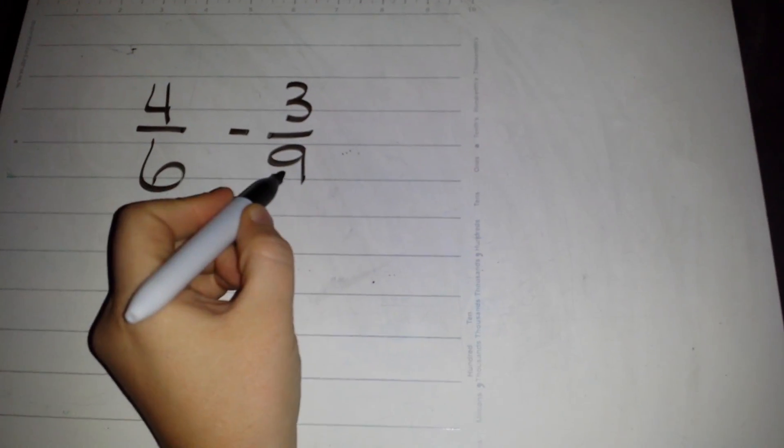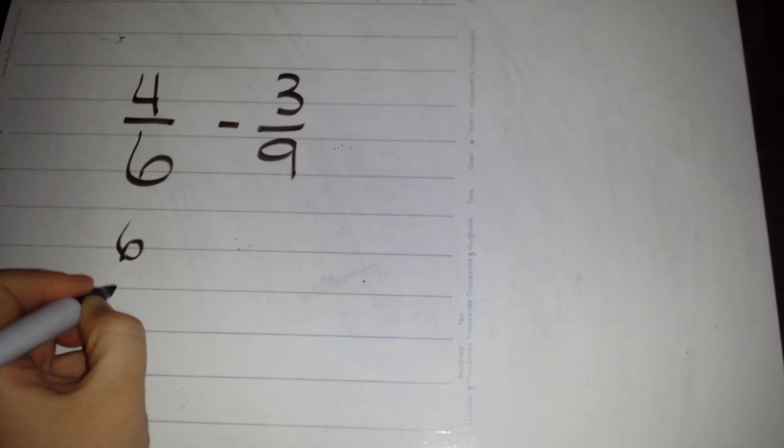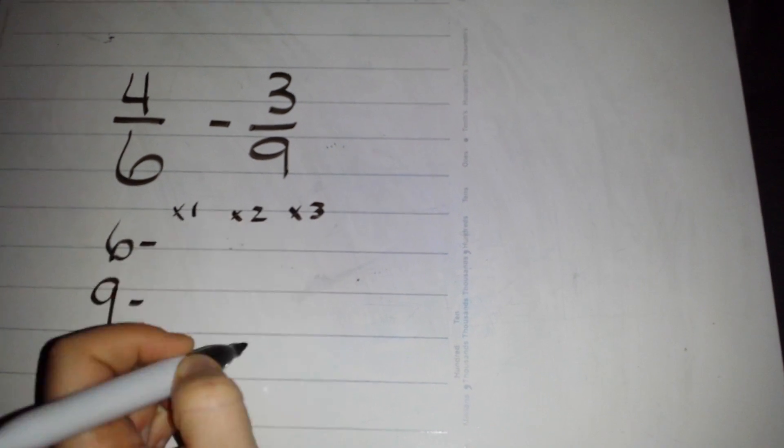So you're going to take your two bottom numbers, and for step one you're going to put them down here. Remember this is like times one, times two, times three, and so forth.